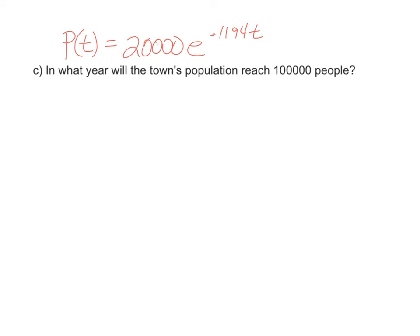In part C of this exercise, we're asked, in what year will the town's population reach 100,000 people? This is similar to the last problem, where we'll be substituting a number into an equation. But this is no longer a time, this is a population, so we'll be substituting 100,000 into the population variable, P(t).